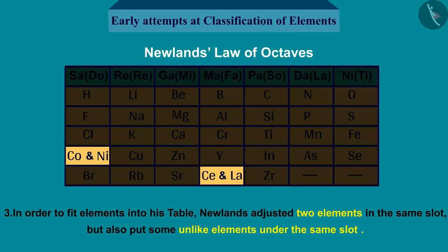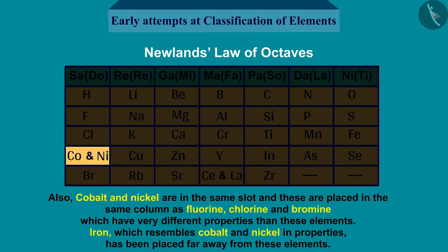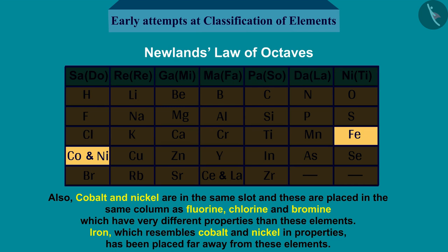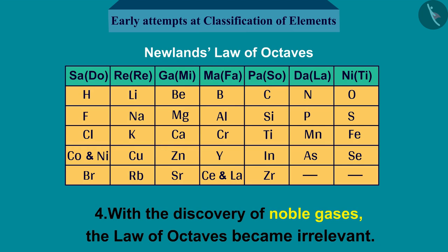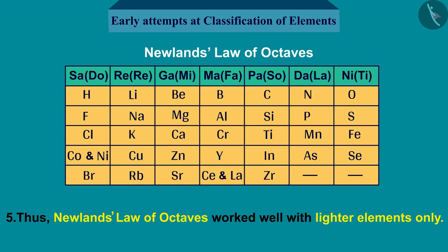Third, in order to fit elements into his table, Newlands adjusted two elements in the same slot, and also put some unlike elements under the same slot. Cobalt and nickel are in the same slot and are placed in the same column as fluorine, chlorine, and bromine, which have very different properties. Iron, which resembles cobalt and nickel in properties, has been placed far away from these elements. Fourth, with the discovery of noble gases, the law of octaves became irrelevant.